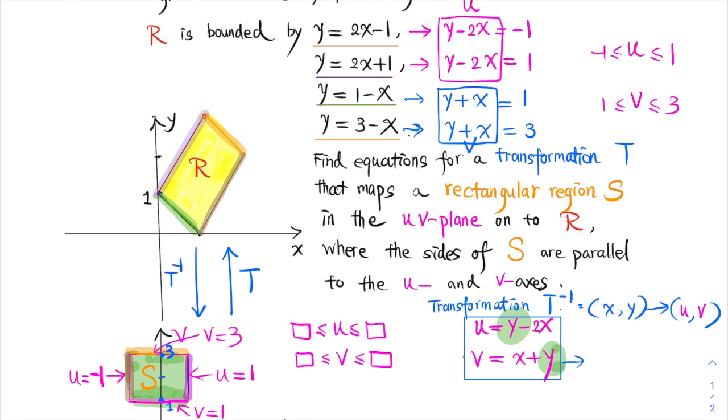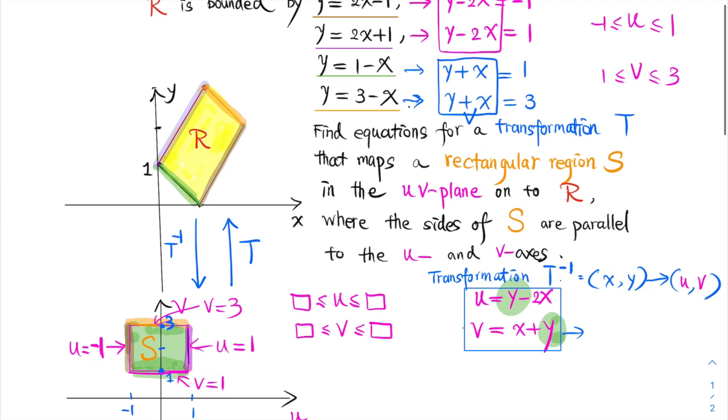because U and V are expressed in terms of X and Y. The transformation that we're looking for is the reverse of this transformation